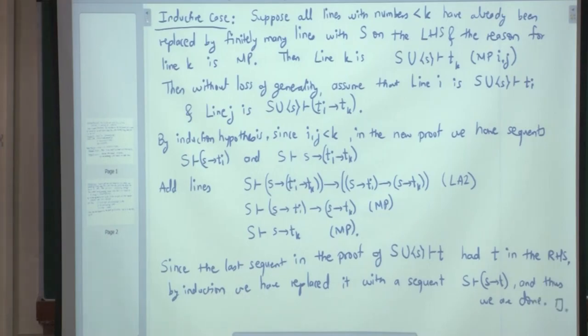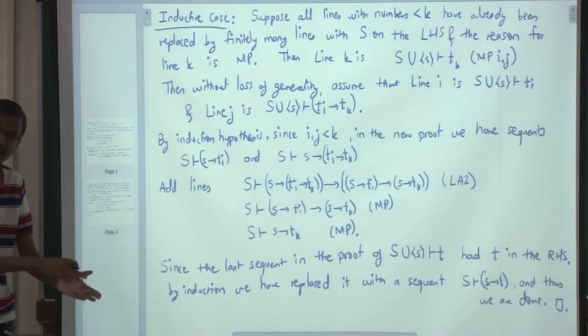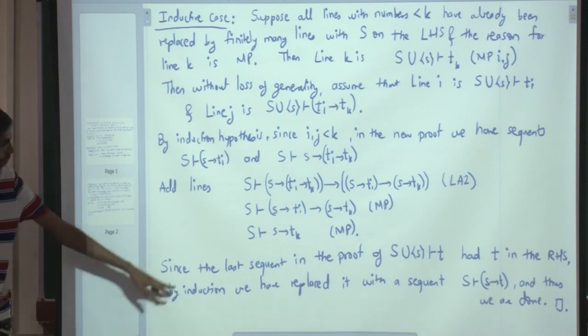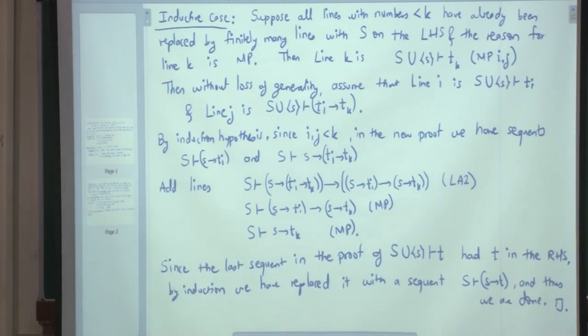This last line is also equally important because what did we want to show? We wanted to show that capital S proves small s implies T and because that was the last line and because we have converted every single line we have also converted the last line. So, therefore, we have this sequent as we need and until then everywhere the left hand side was capital S. So, we have actually obtained a proof of little s implies T from capital S.